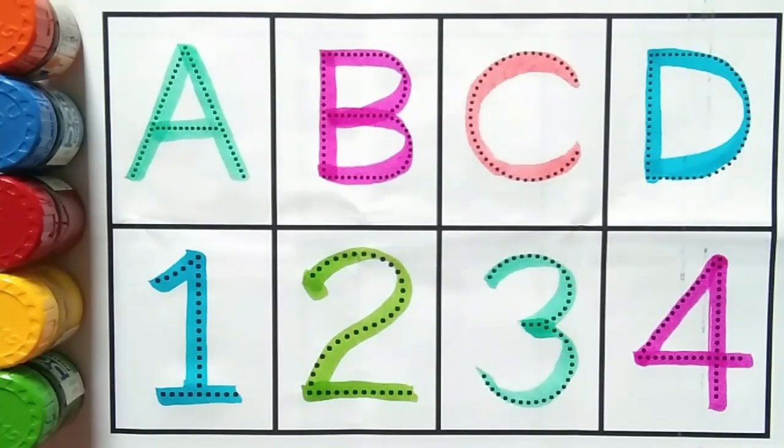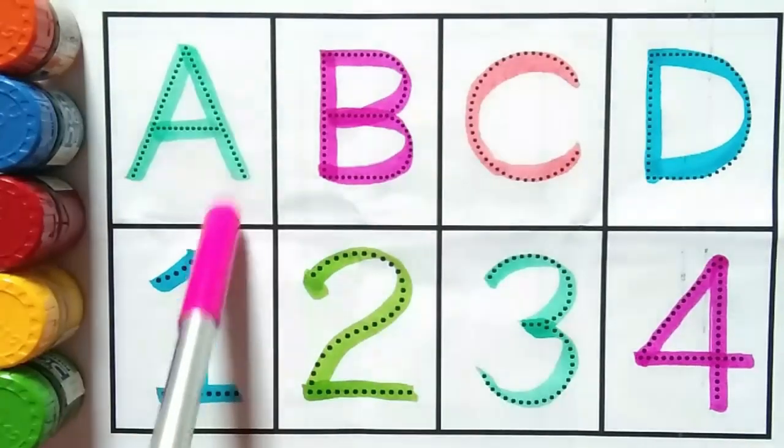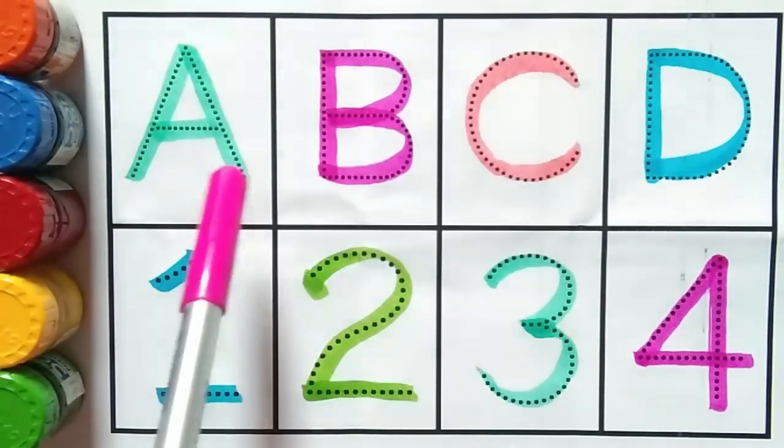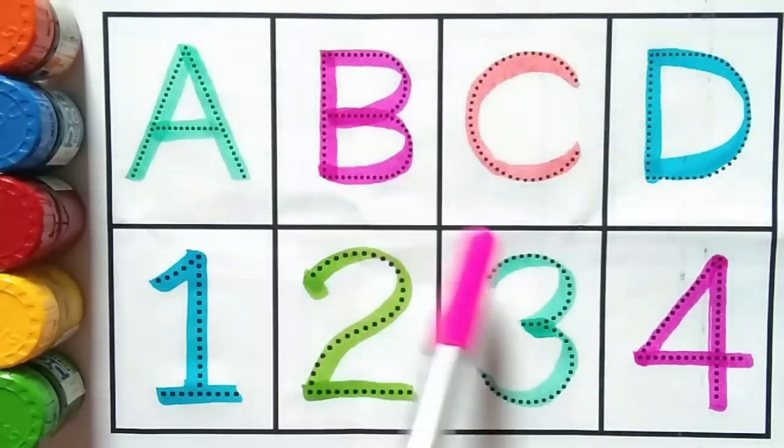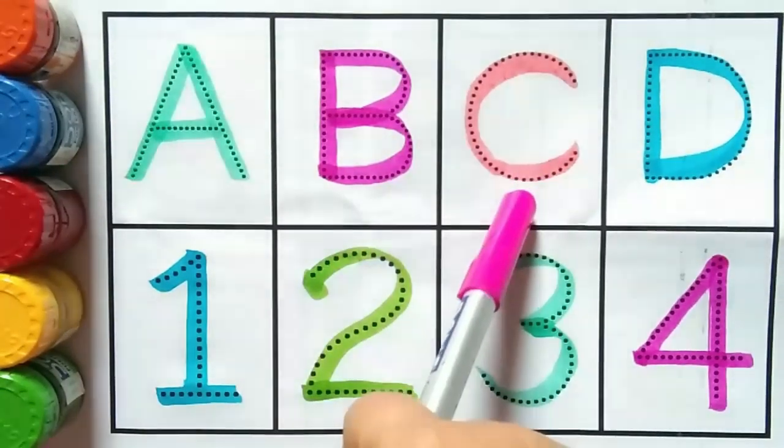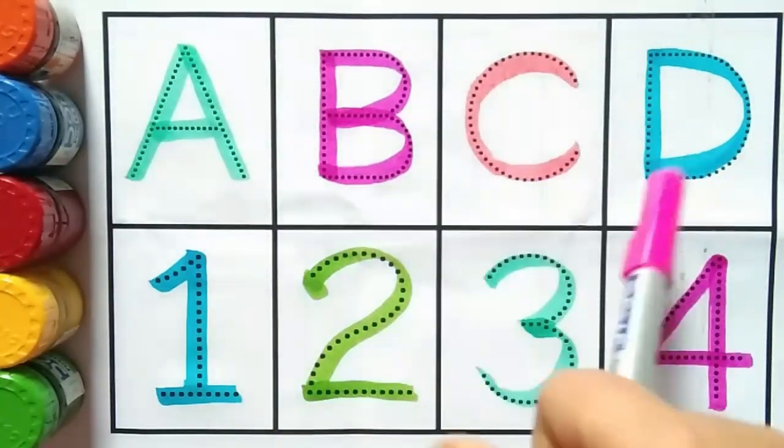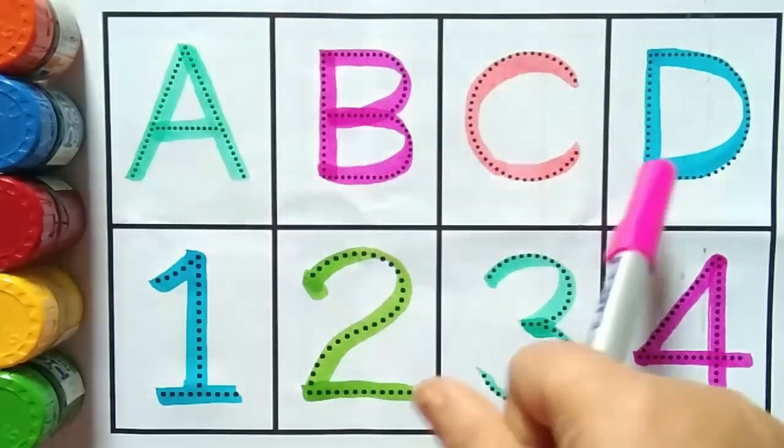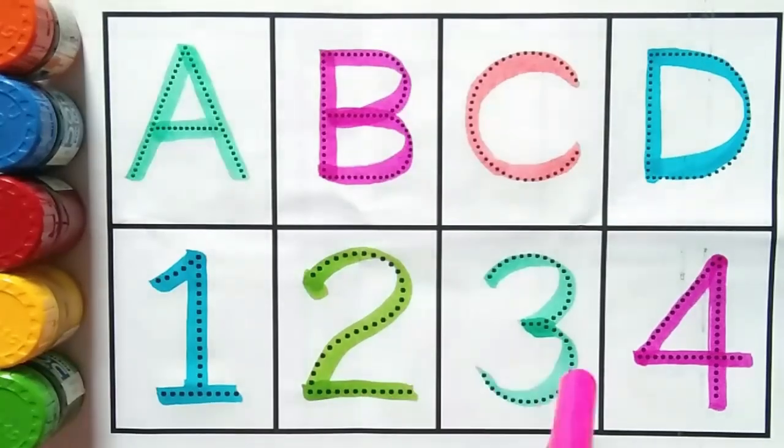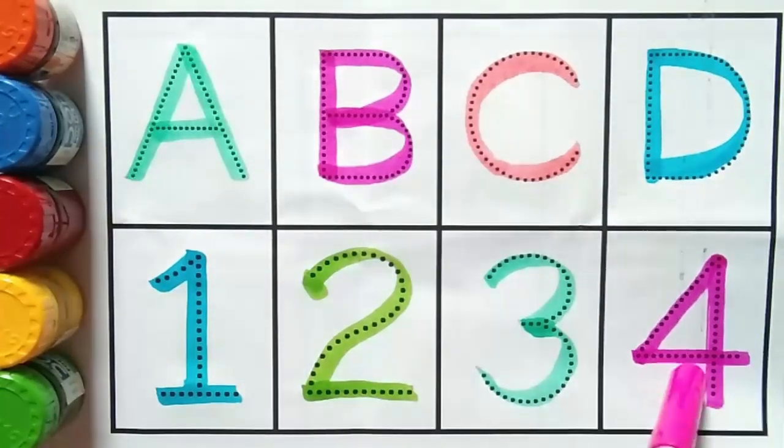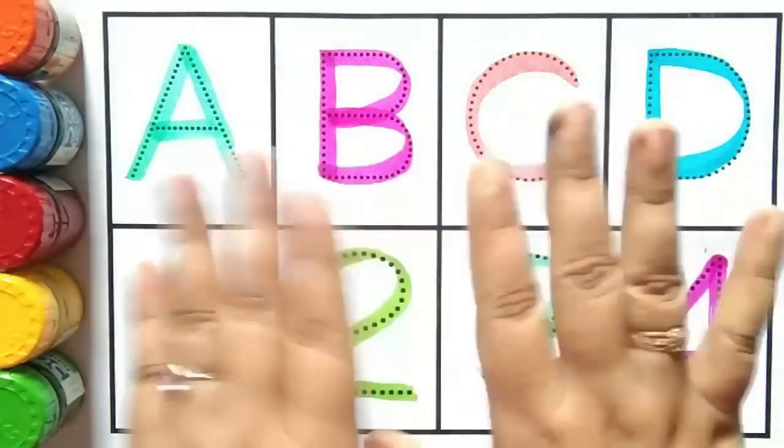Repeat: A for astronaut, B for buffalo, C for calf, D for doll, one, two, three, four. Bye bye kids.